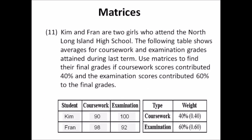Number eleven: matrices again. Kim and Fran attended North Long Island High School. The table shows averages for coursework and examination grades. Use matrices to find their final grades — coursework contributed 40% and examination scores contributed 60%. Write a two-by-two matrix for Kim and Fran, then a one-by-two matrix with 0.4 and 0.6 as weights. Remember it's rows by columns when multiplying matrices.